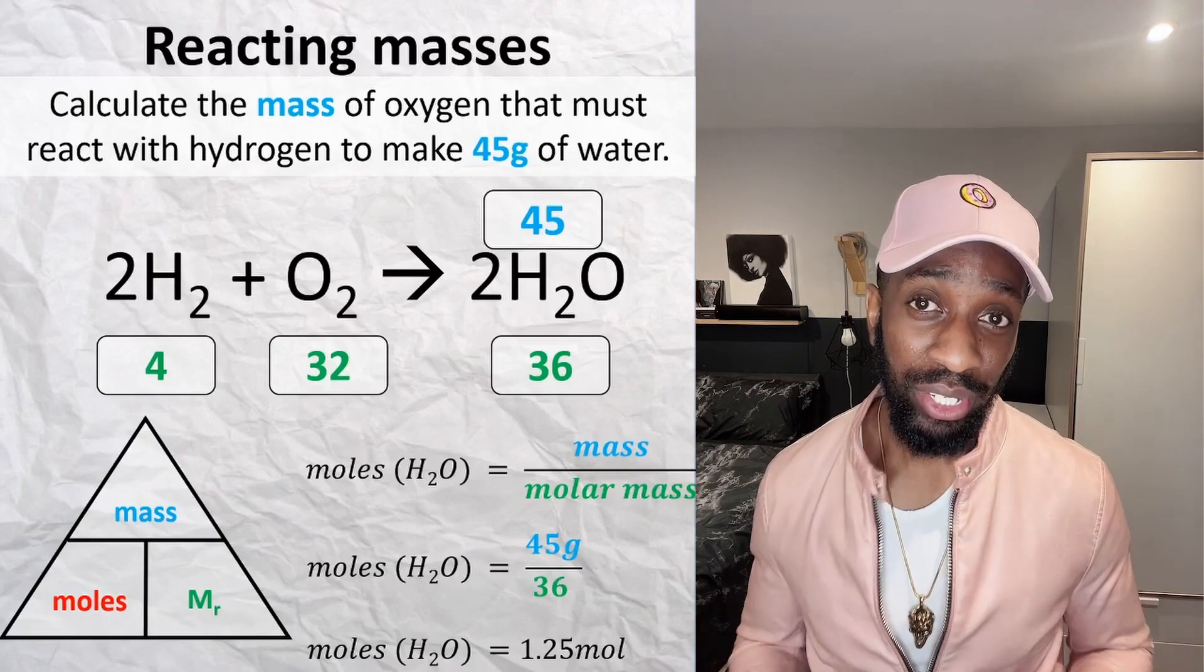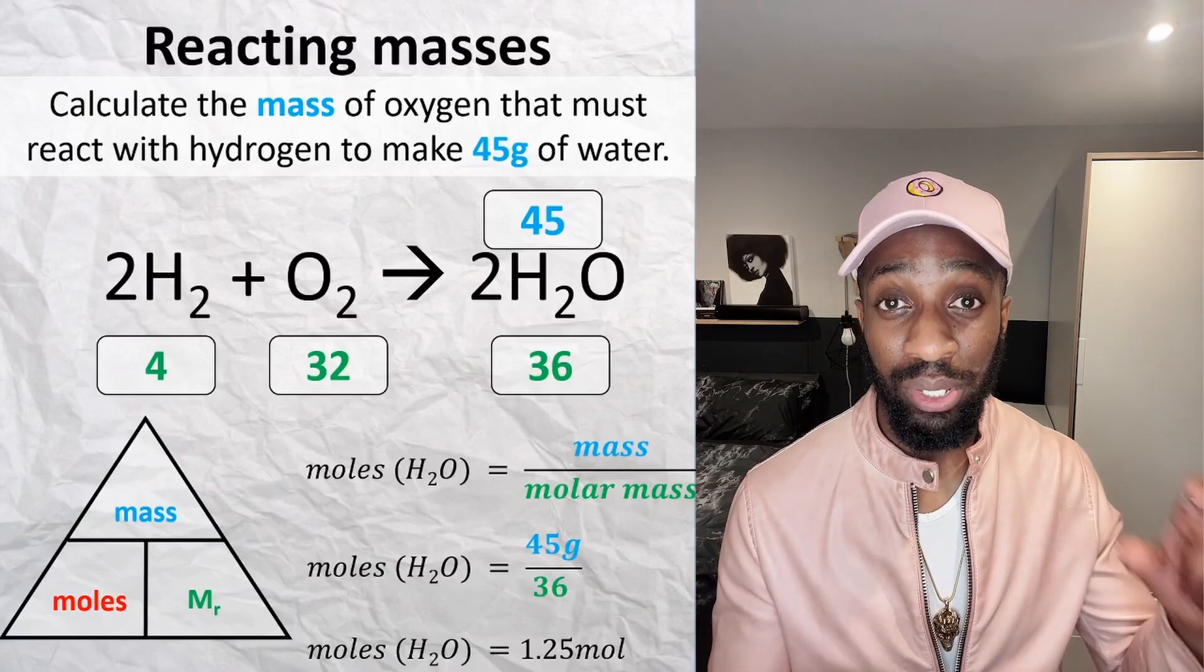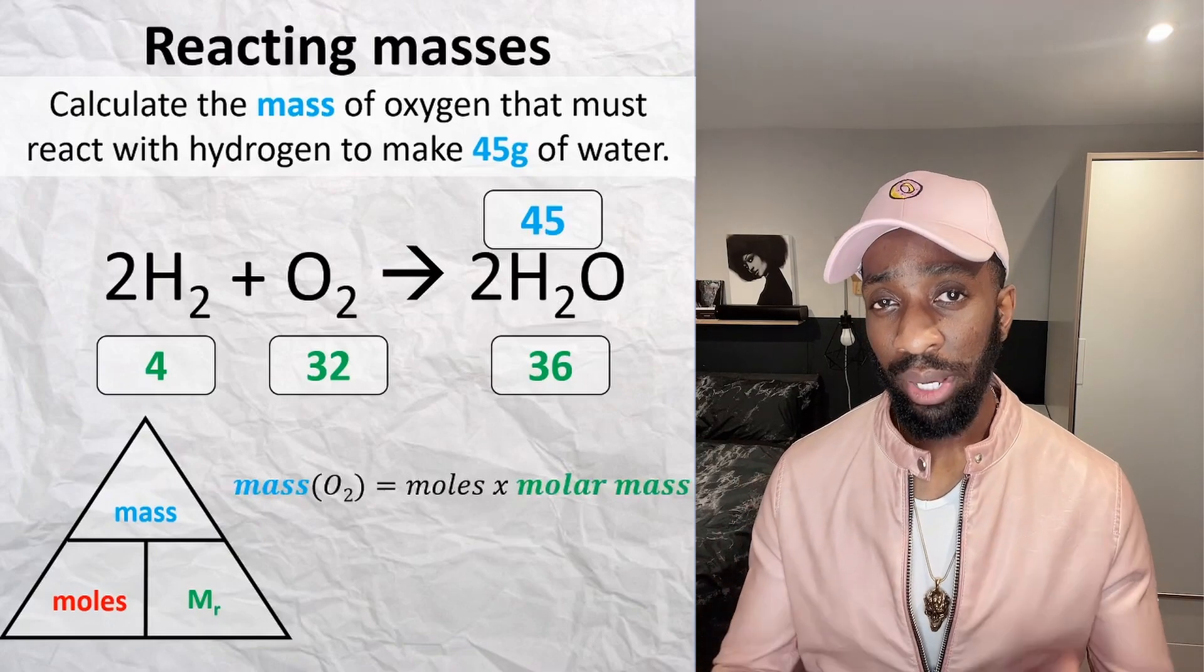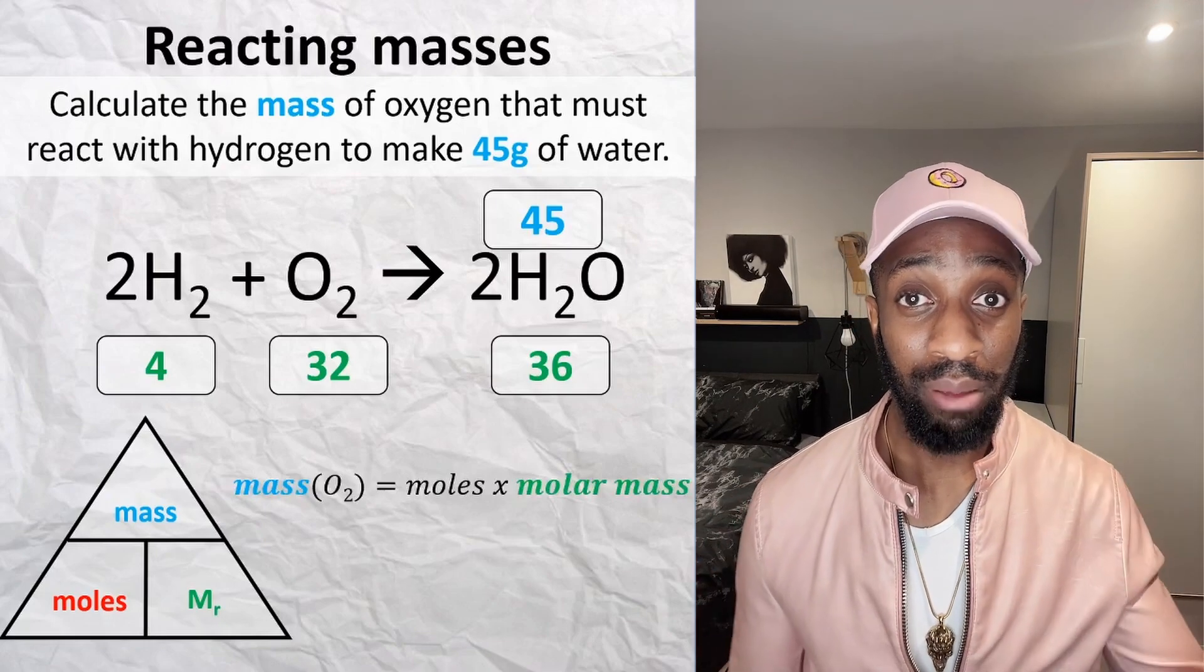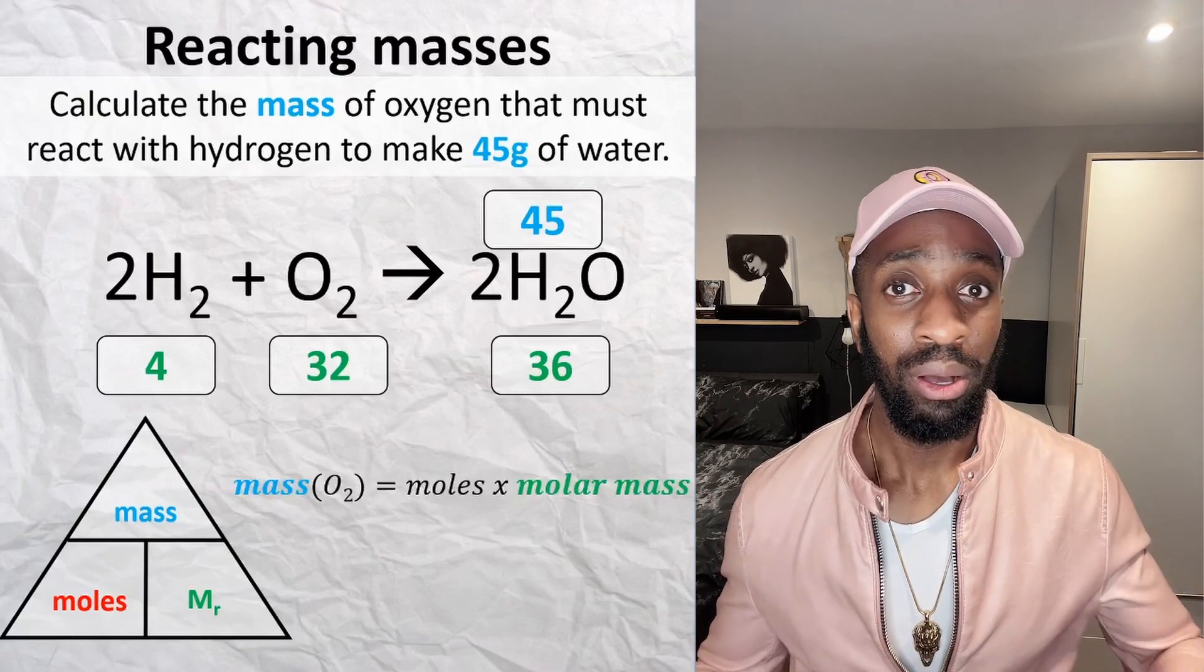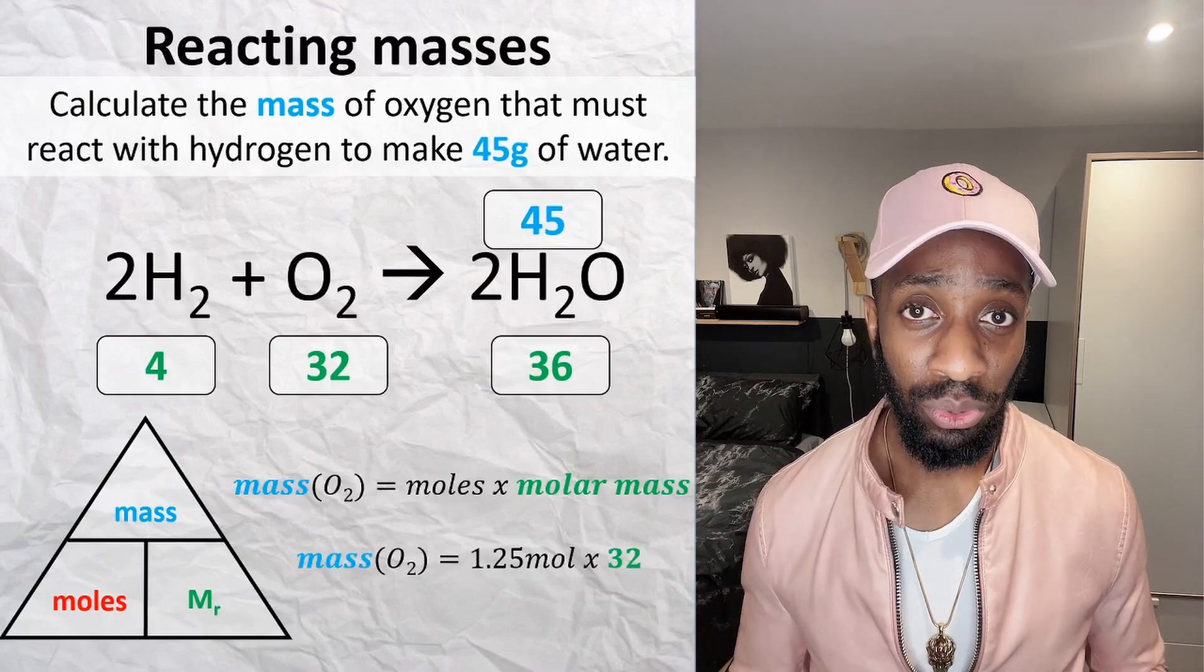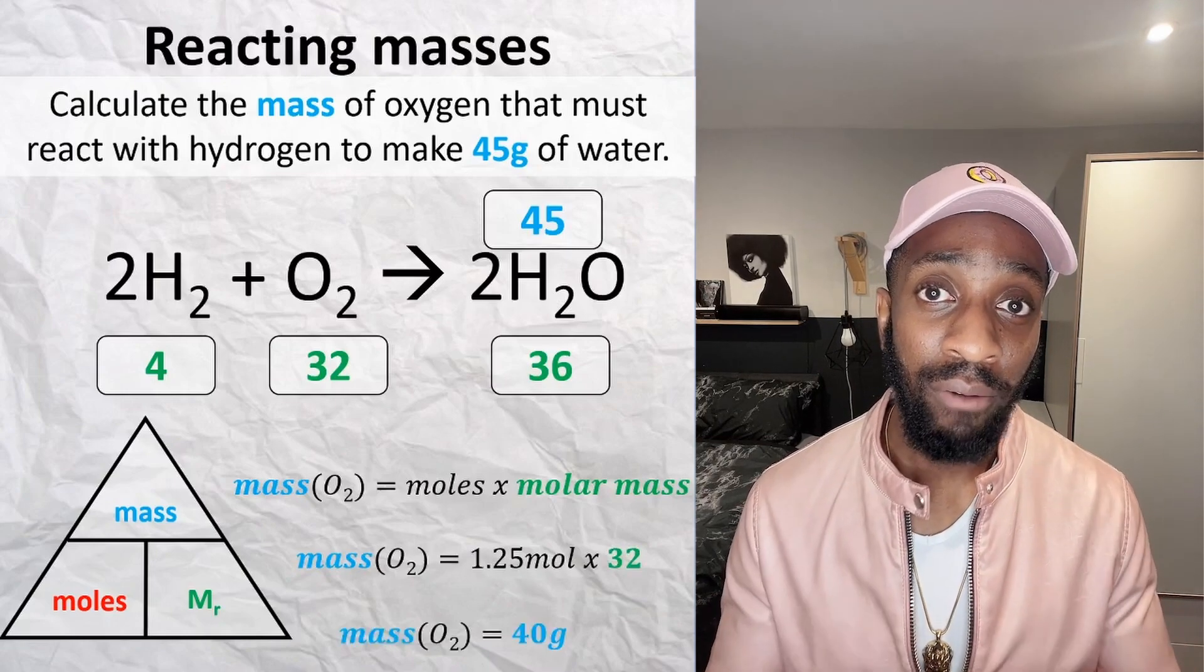Remember, the question is asking us how much is the mass of oxygen that is needed to produce this 45 grams of water. Looking at the equation, mass is moles times molar mass. So to work out the mass of oxygen that we need to react with hydrogen to produce 45 grams of water, we're going to take the moles that we just worked out, which is 1.25 moles, and we times that by the molar mass of oxygen in this equation, which is 32.